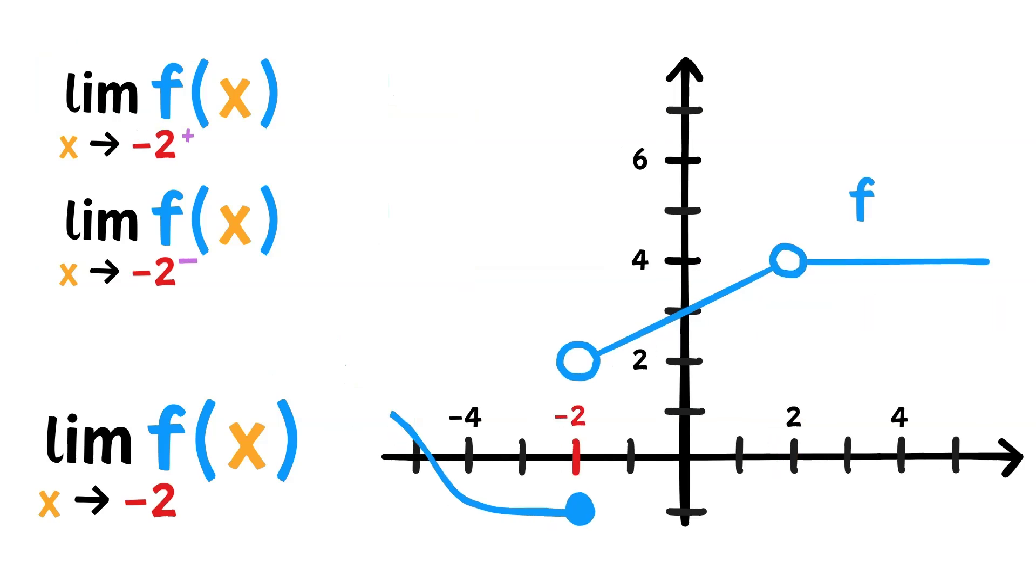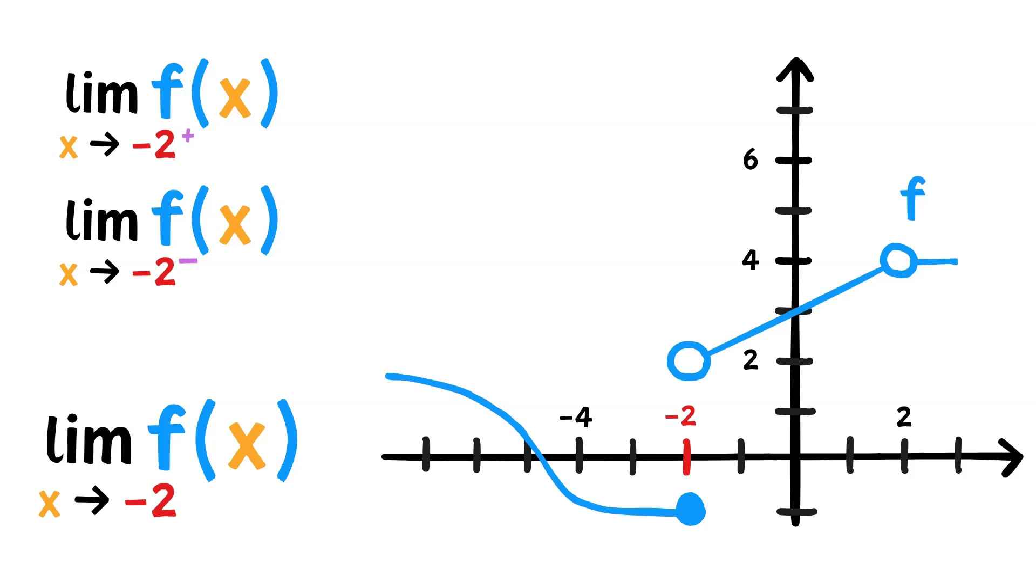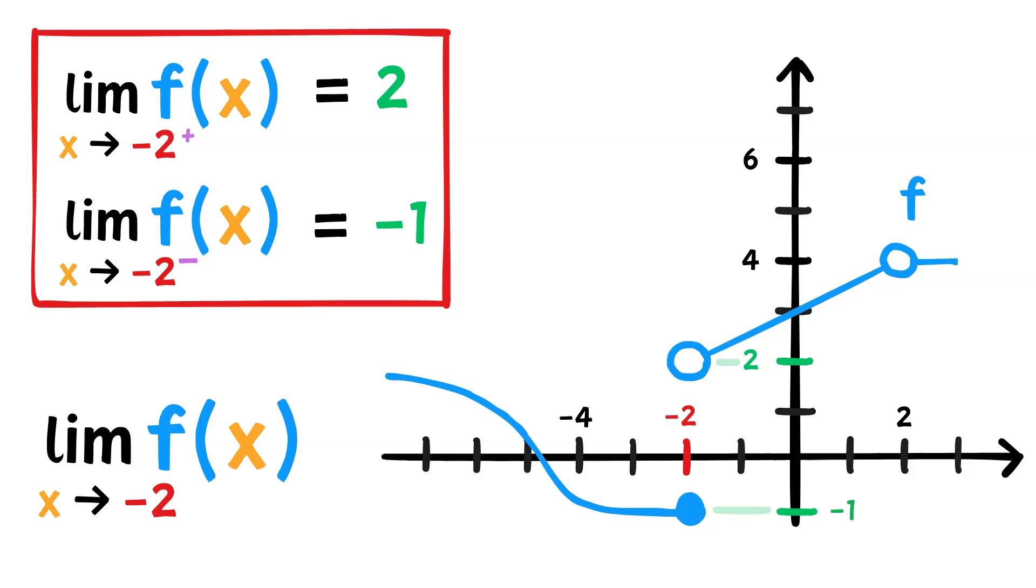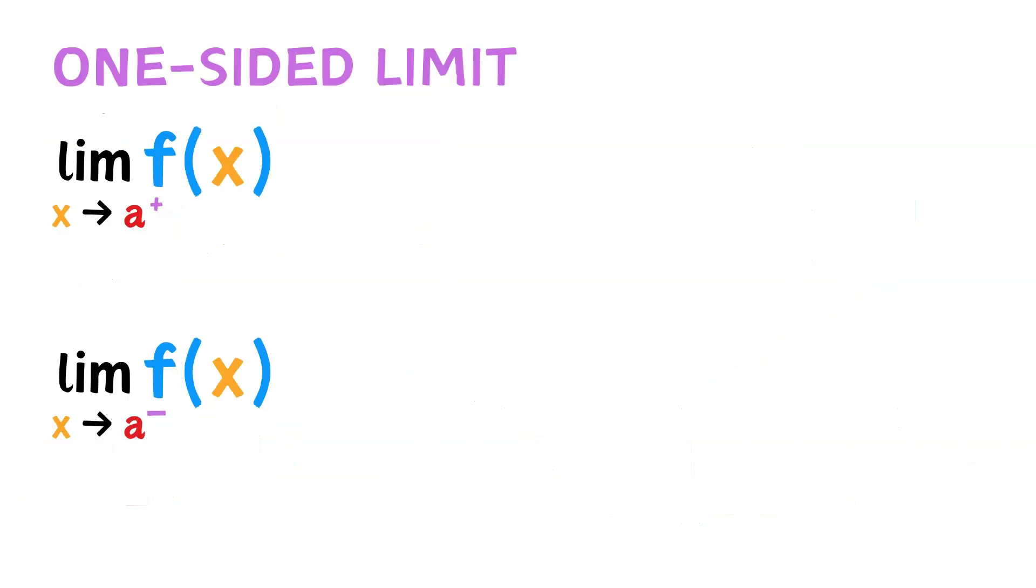Now, let's move over to negative 2. What is the limit of f of x as x approaches negative 2? Well, taking the limit from the left, as x approaches negative 2, f of x seems to approach negative 1. From the right, as x approaches negative 2, f of x approaches 2. The one-sided limits do not agree, thus the limit does not exist. For a limit to exist, the one-sided limits must exist and be the same.